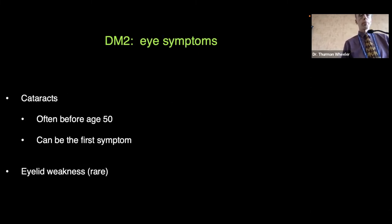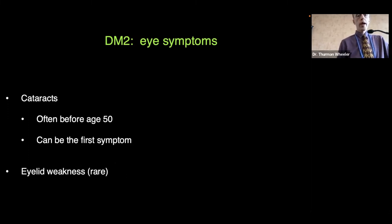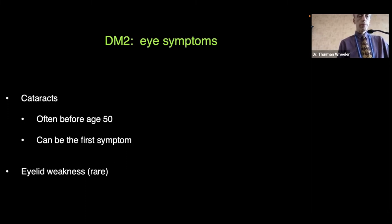DM2 also features cataracts, which often occur before the age of 50 and can even be the presenting symptom — even before muscle symptoms sometimes. Eyelid weakness, which is common in DM1, is relatively uncommon in DM2.